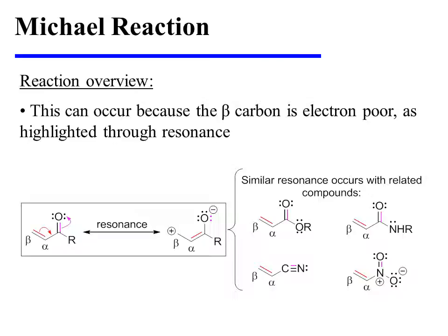As the alkene pi-bonding electrons move towards the carbonyl, the carbonyl pi-bonding electrons can be displaced onto oxygen. This leaves a formal positive charge at the beta position, so the resonance hybrid has a partial positive charge at the beta position.